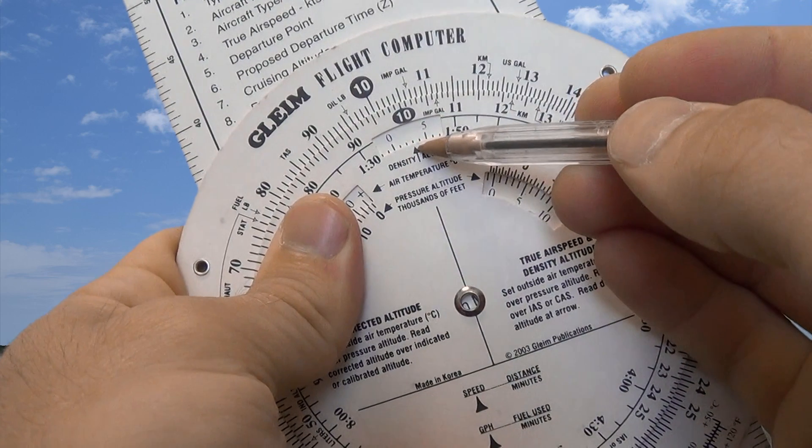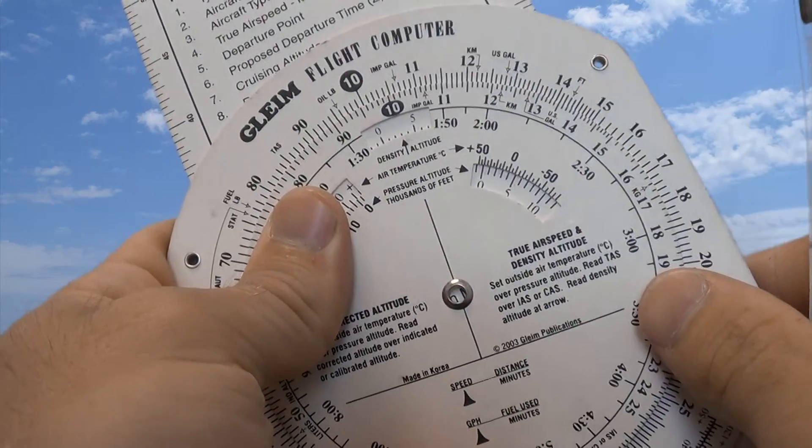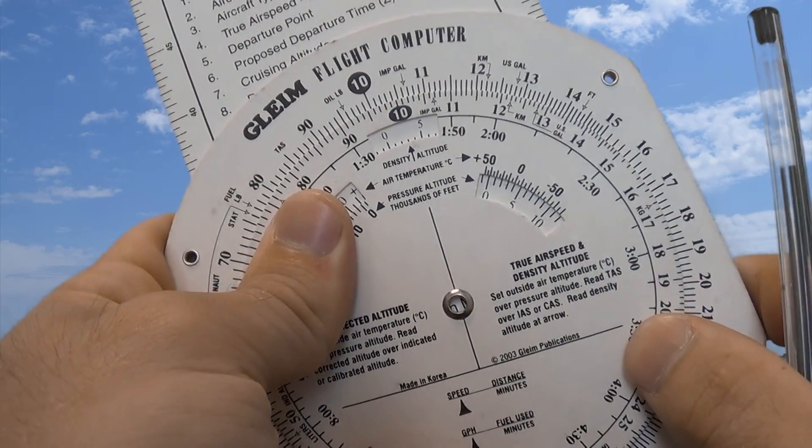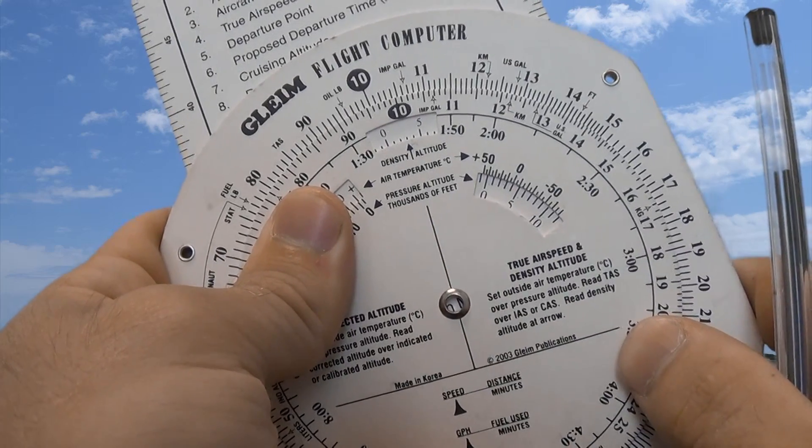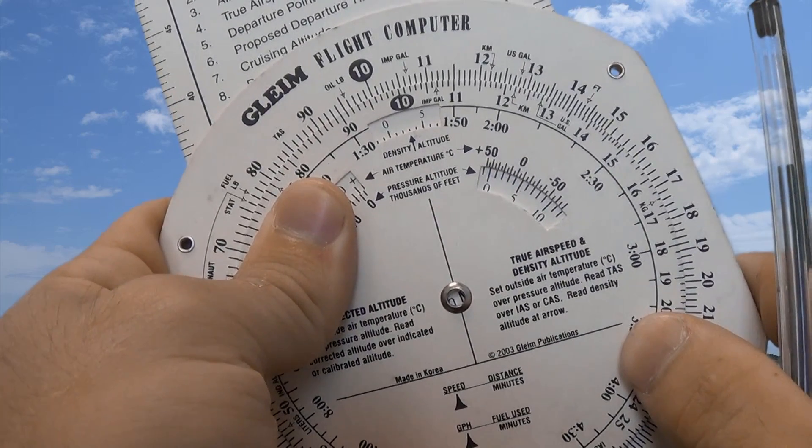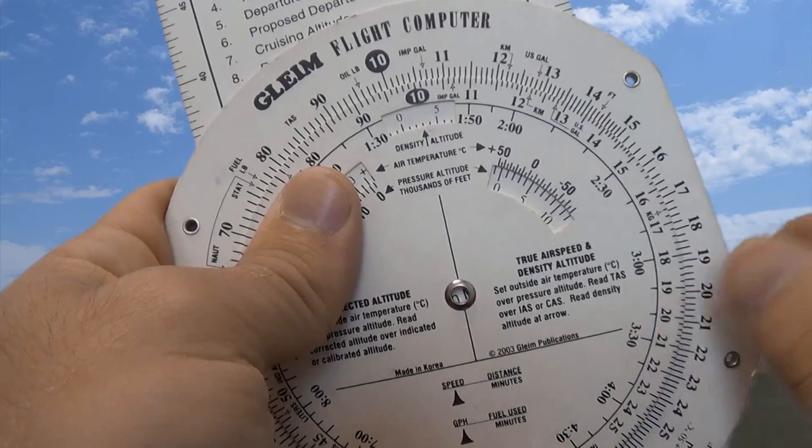And we simply just read through the top here, we have about a 3,000 foot density altitude, so the aircraft would behave as if it was at 3,000 feet in less dense air, less power, less climb performance, those types of things.